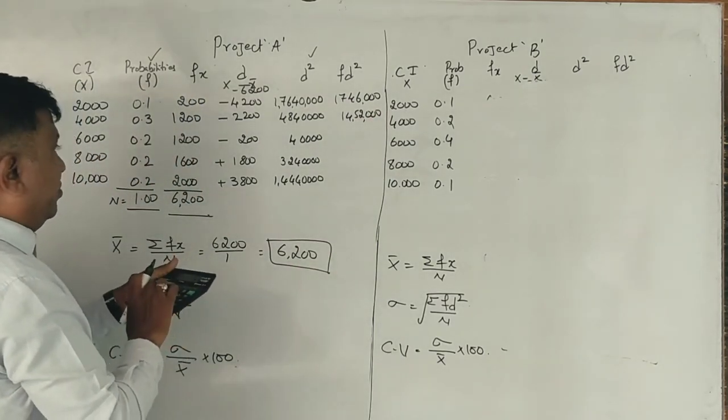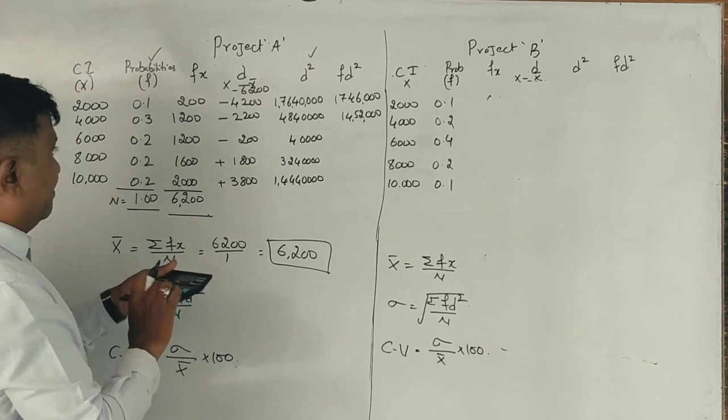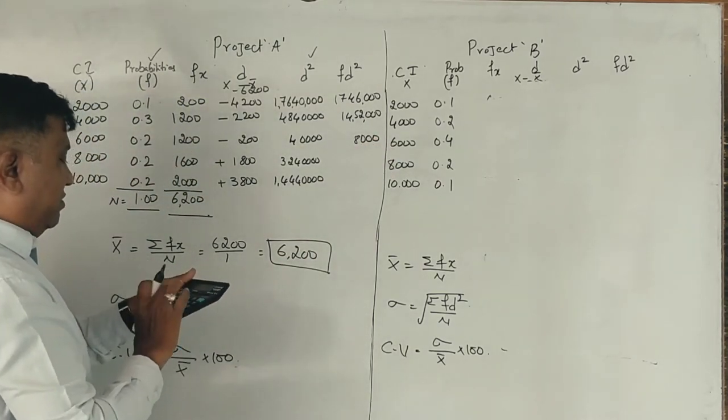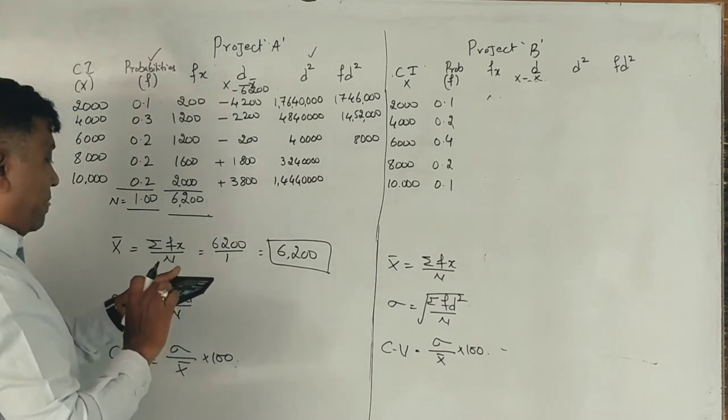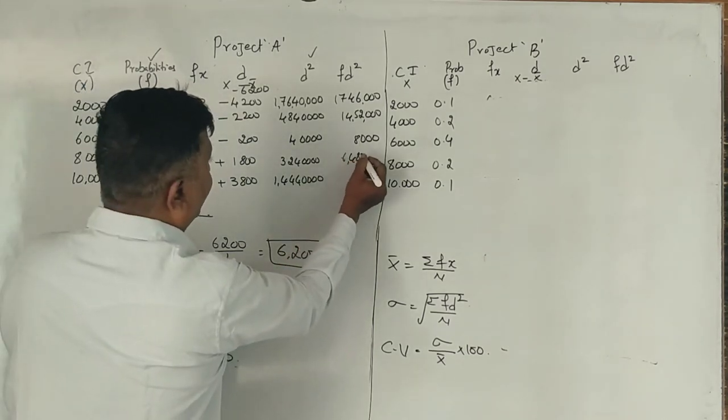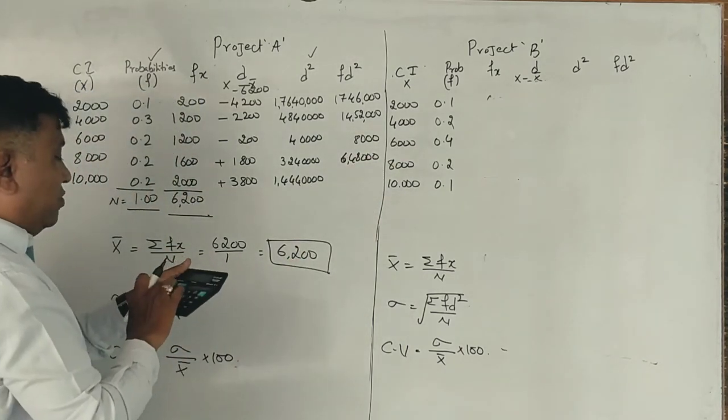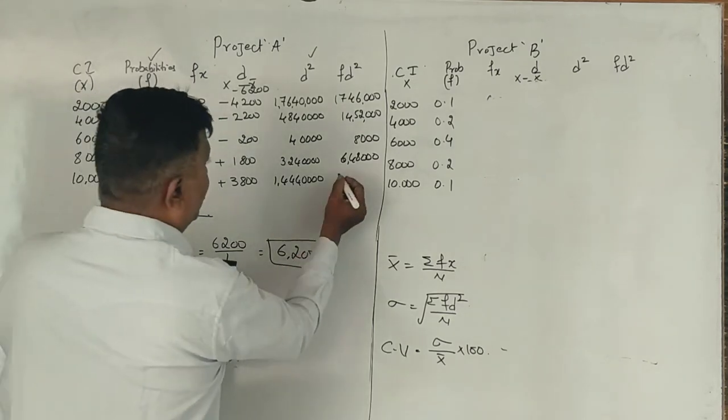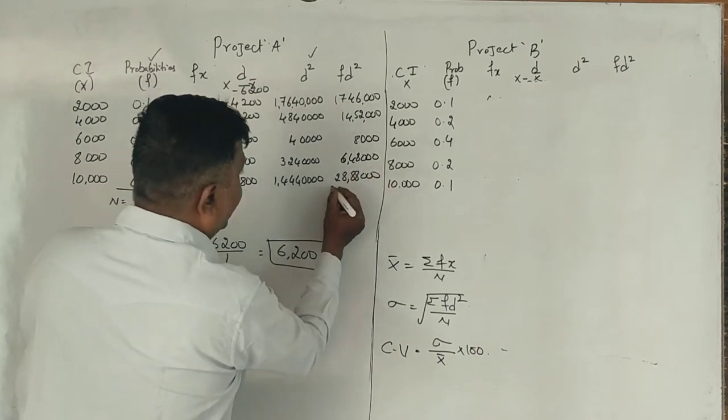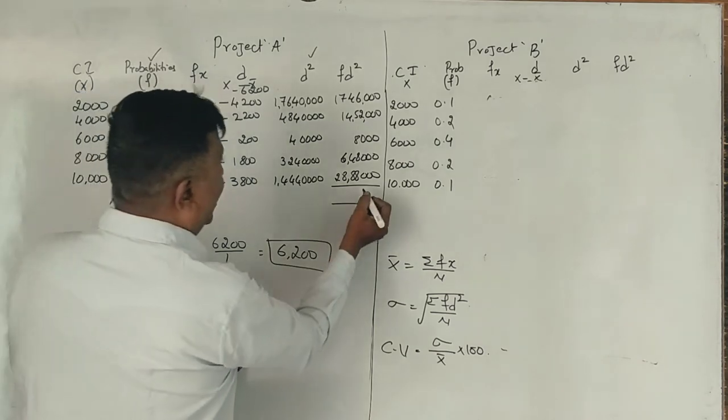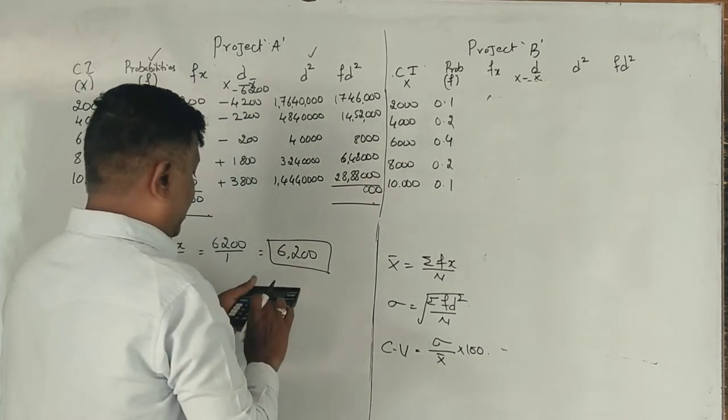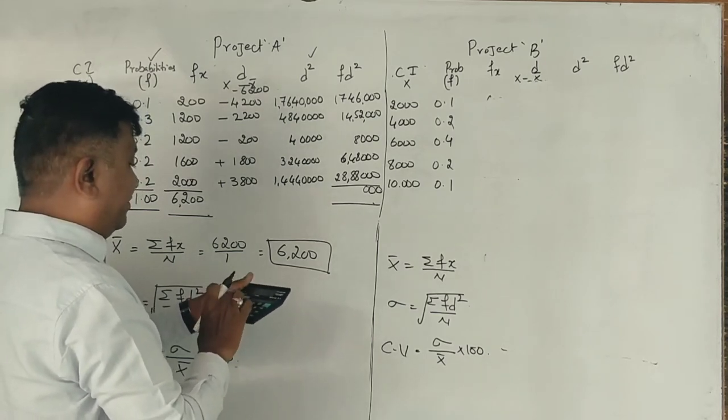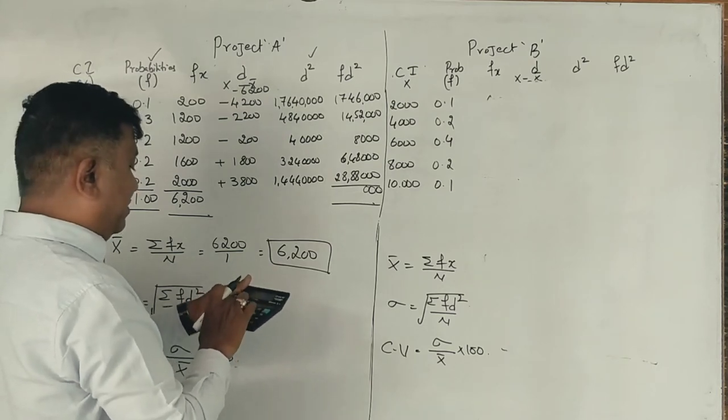Next, 0.2 into 4,000 equals 800. Next, 324,000 into 0.2 equals 64,800. Then 144,000 into 0.2 equals 28,800.